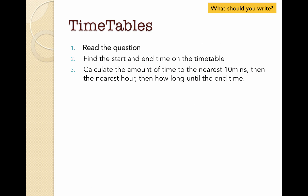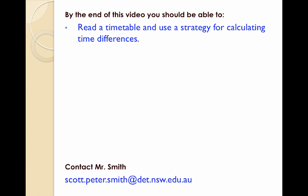What should you write down? I'm going to get you to write down these three steps. Number one: read the question. Number two: find the start and end times on the timetable. Number three: calculate the amount of time to the nearest 10 minutes, then the nearest hour, then how long until the end time. If you can do that regularly, you'll have a really good strategy for calculating time differences. Hopefully now you'll be able to read a train timetable and use this strategy. Good luck.